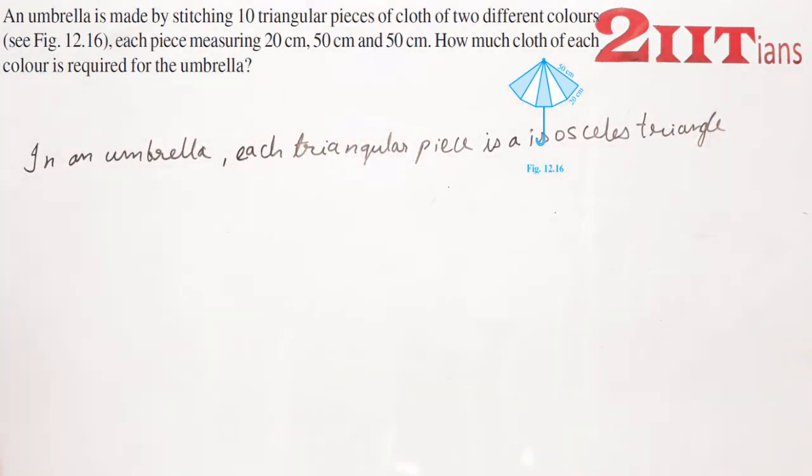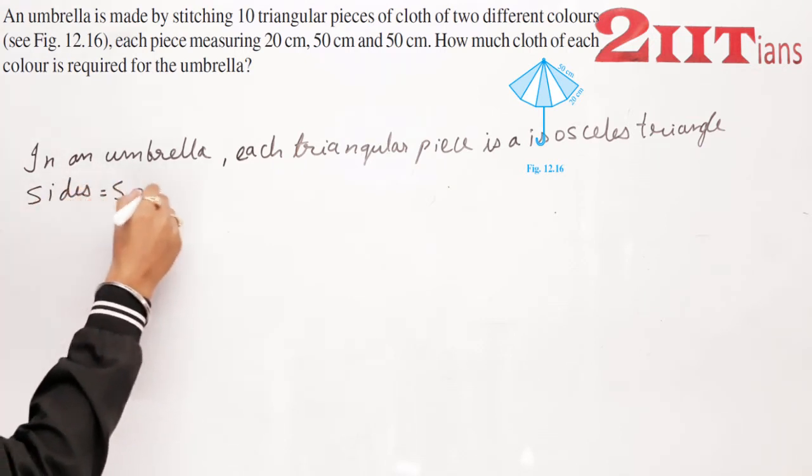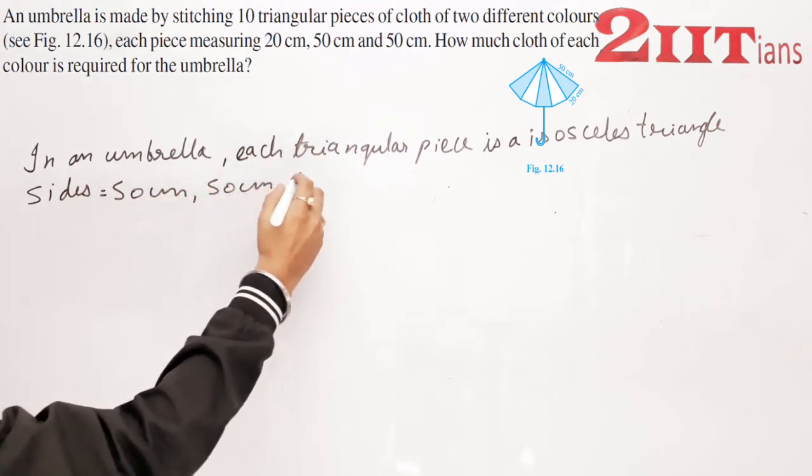All triangles are isosceles with sides 50cm, 50cm and 20cm.